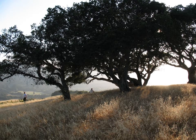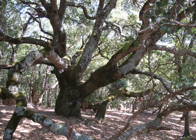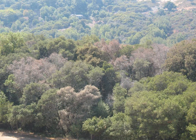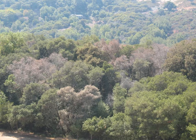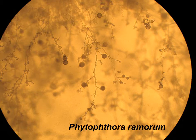Coast live oak is one of the iconic oak species in California. It is an evergreen oak and can grow to enormous size. Since the mid-1990s, sudden oak death has killed hundreds of thousands of Coast live oaks and other oaks along the mid-coastal regions of California. This disease is caused by a microscopic organism called Phytophthora remorum.